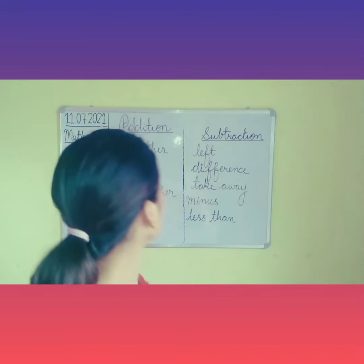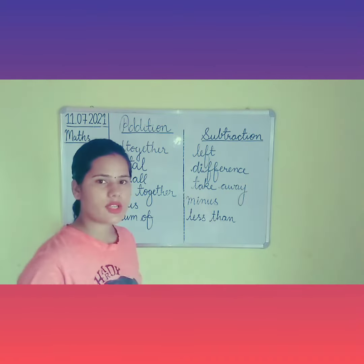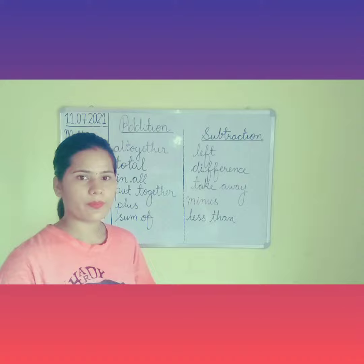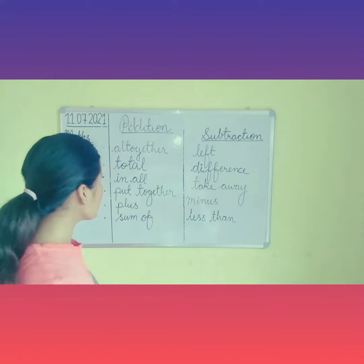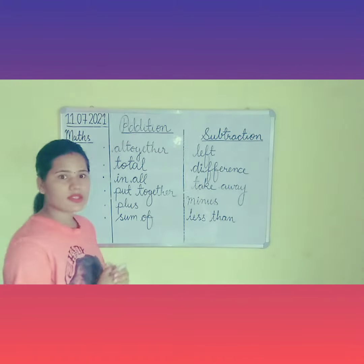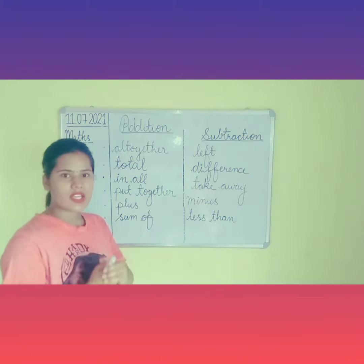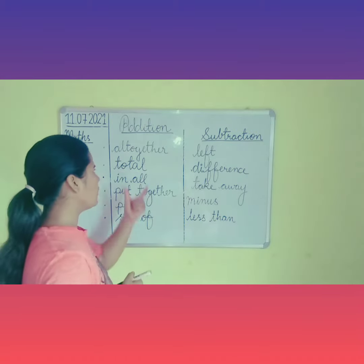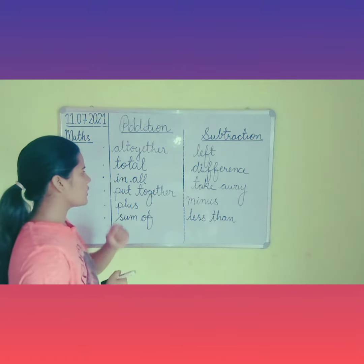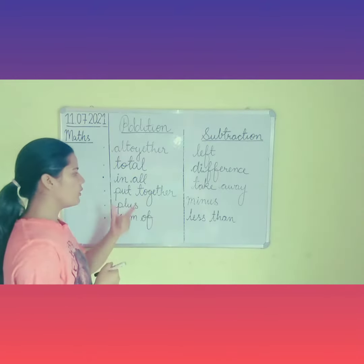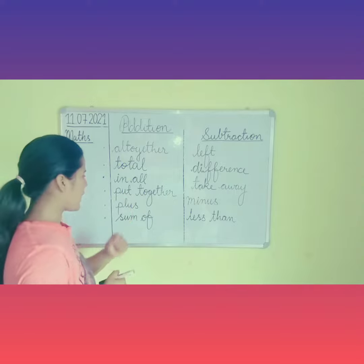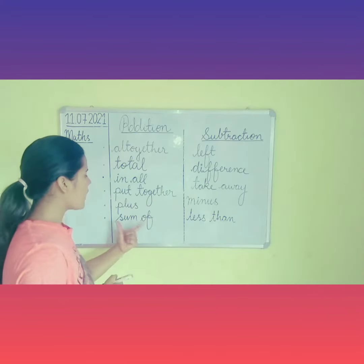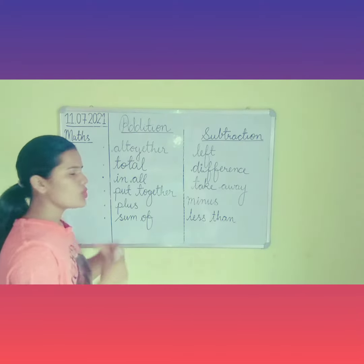Children, first come to the addition column. As you can see, these terms in the addition column: all together, total, in all, put together, plus, sum of.